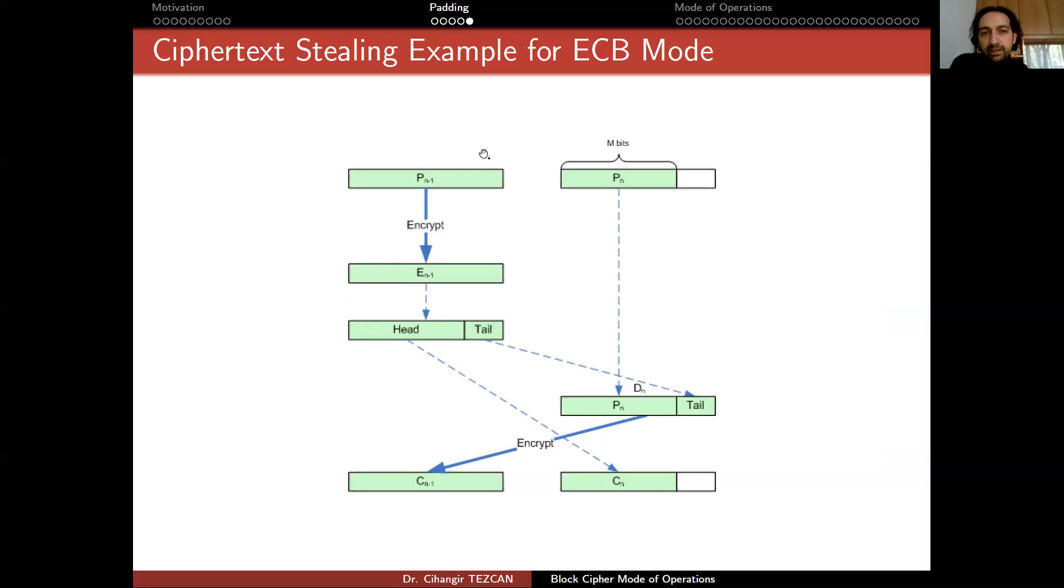So you encrypt the one previous plaintext block and obtain the ciphertext block here. And by looking at the empty place here, if it is 10 bits, then you make this tail as 10 bits. If it is 20, you make this part 20. So you take that many bits and append it to the end of this plaintext block. Then you encrypt this whole thing.